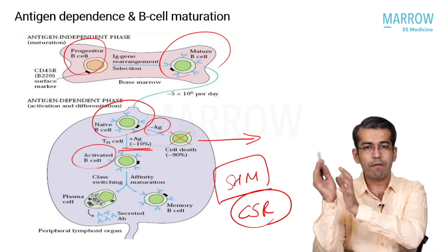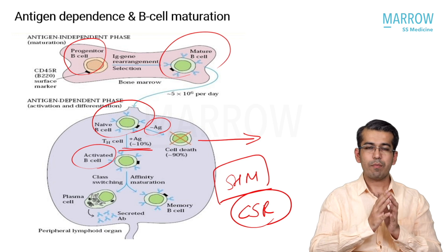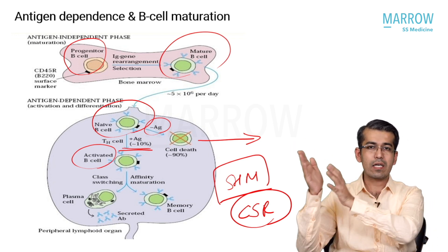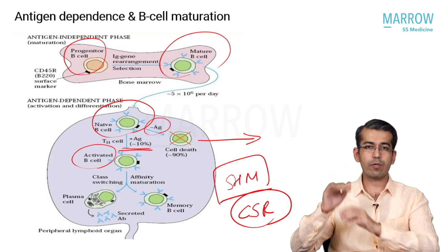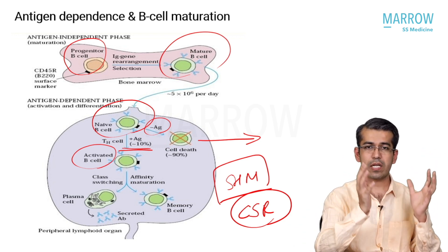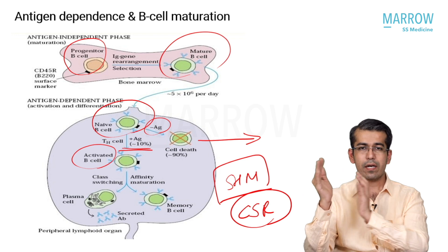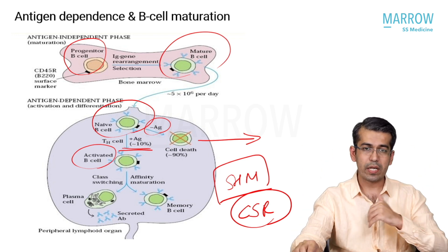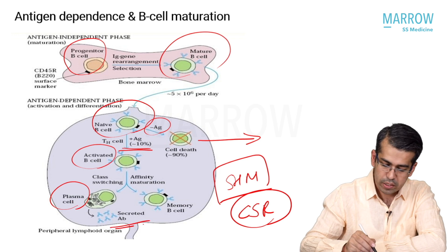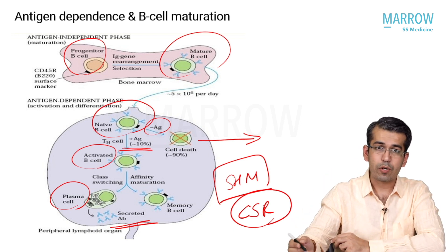Somatic hypermutation is analogous to the UPSC exam: out of 1 lakh aspirants, only a thousand get selected for interview, and of those only a hundred proceed to the IAS. Similarly, millions of naive B cells enter the lymph node, 90% are eliminated, and the remaining 10% undergo somatic hypermutation to become post-germinal center mature B cells, then plasma cells. These plasma cells secrete antibodies with both kappa and lambda light chains, but only one immunoglobulin isotype.